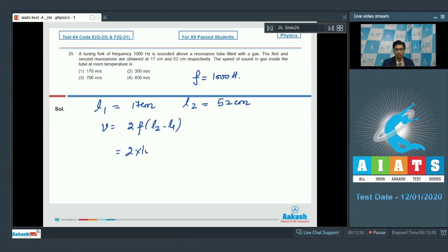That will be 2 into 1000 into 52 minus 17. This will be equal to 700 meters per second. And hence option number 3 for this question is the correct answer. Now let us discuss question number 26.